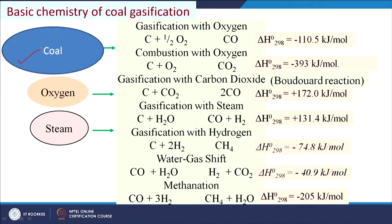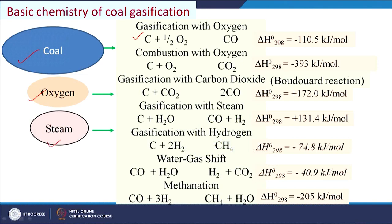Now we will see the chemistry — the reactions that take place in gasification. The feedstocks are coal, oxygen, and steam. These schemes show elemental reactions. Coal contains carbon, hydrogen, oxygen, sulphur, nitrogen, etc., but we are considering the major component, carbon. The first reaction is C + ½O₂ → CO, termed gasification with oxygen, with a heating value of -110.5 kJ/mol. Combustion with oxygen: C + O₂ → CO₂, also exothermic.